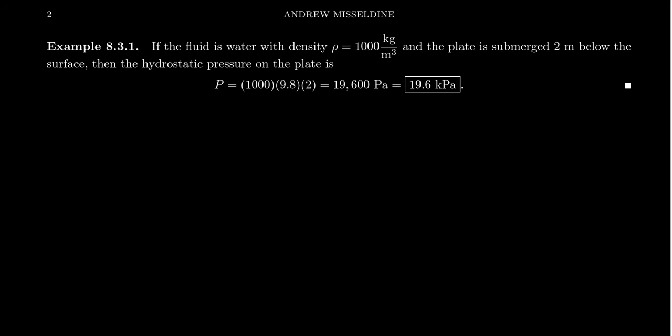So a very simple calculation of this. Consider if we have a fluid, which is water. The density is a thousand kilograms per meters cubed. And if the plate is submerged two meters below the surface, then the hydrostatic pressure will be one thousand kilograms per meters cubed, then 9.8 meters per second squared, that is the acceleration due to gravity, and then you times that by two meters, which is the depth.